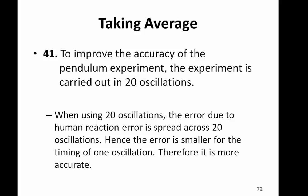Because when we're using 20 oscillations, the error due to human reaction error is spread across 20 oscillations. Hence the error is smaller for the timing of one oscillation. Therefore it is more accurate.